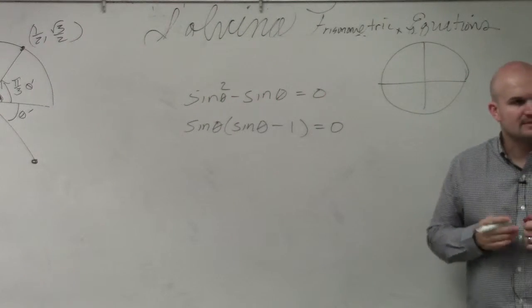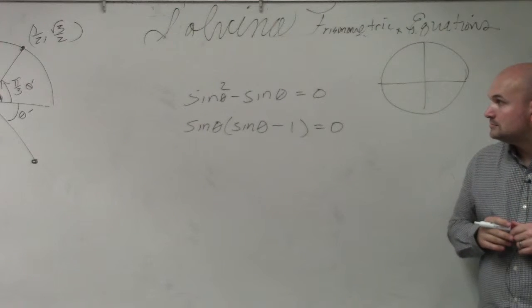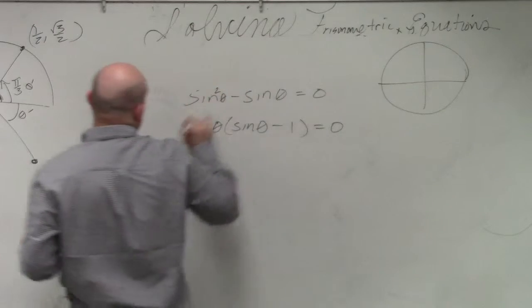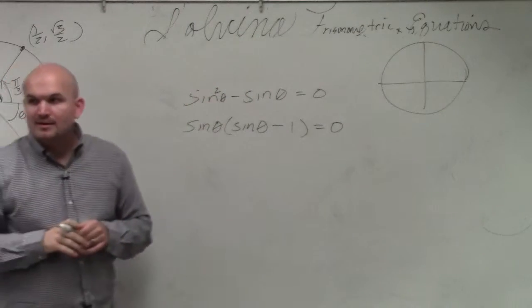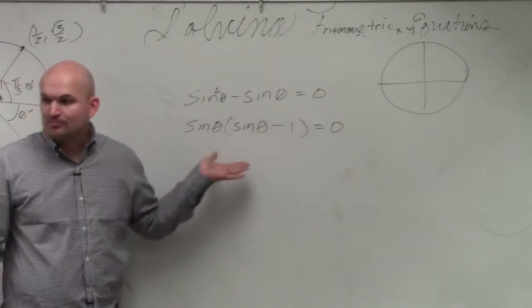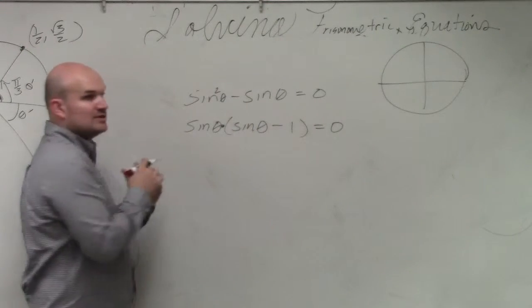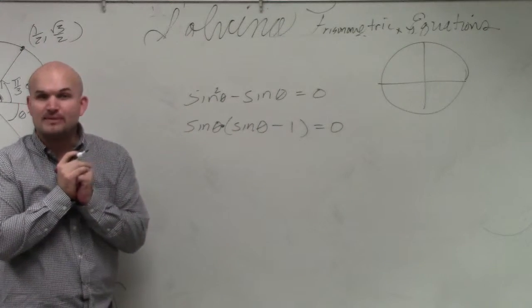Does everybody agree with me? Was that sine squared theta or sine theta? It was sine squared of theta. OK, now I have the product of an expression, of two expressions, equal to 0. Now I can apply the 0 product property, correct?